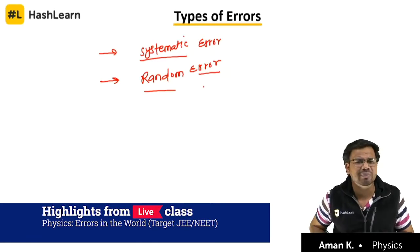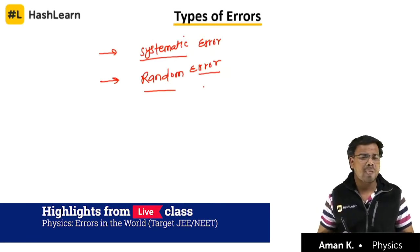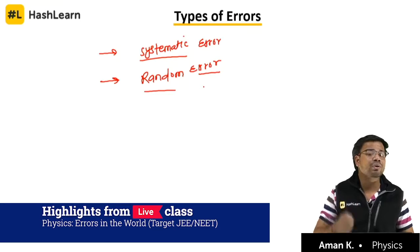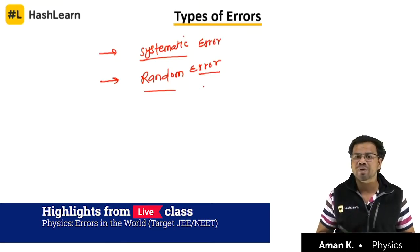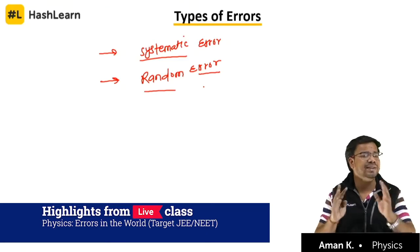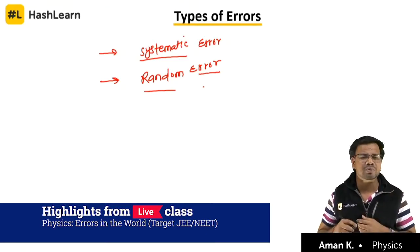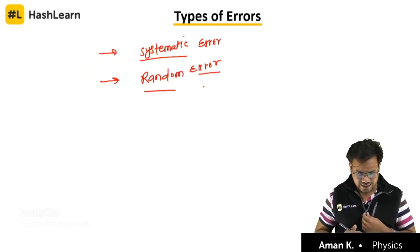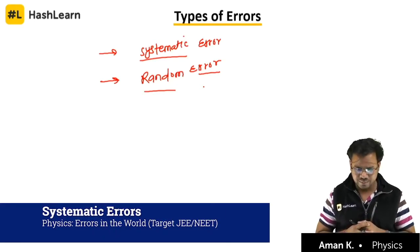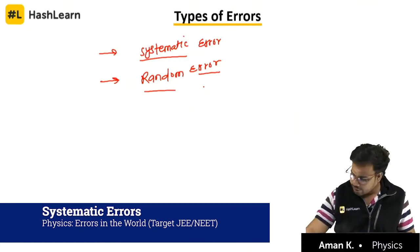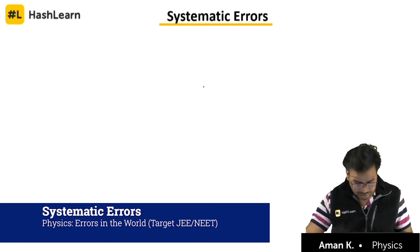Do you have any idea about systematic error and random error? Just let me know how much you know about the errors. What do you know about systematic error and random error? This is the first basic topic of the eleventh class. I think most of you have already studied about this topic in school.